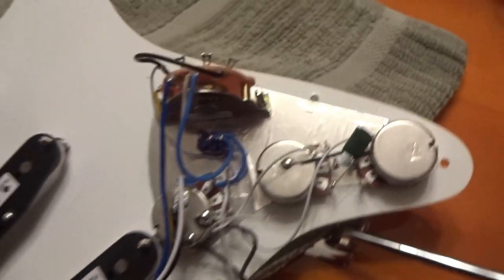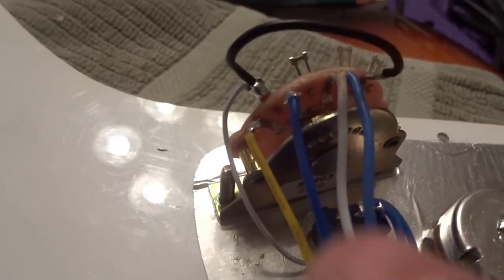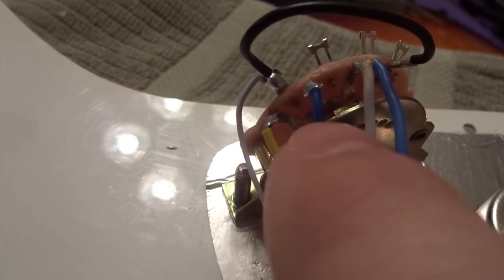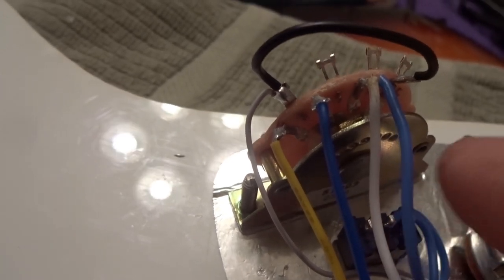Okay, so I think here's a good place to kind of go over what we did. So we got the bridge, we got the middle, and then we got the neck along with the Gilmour mod.